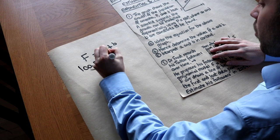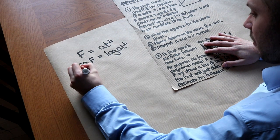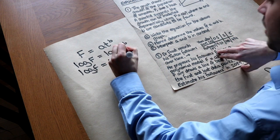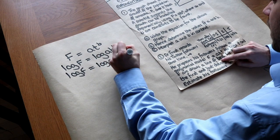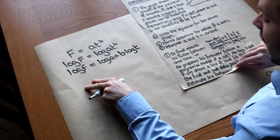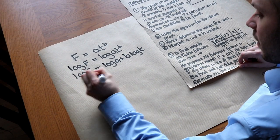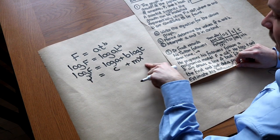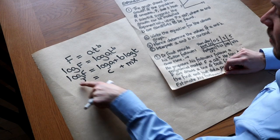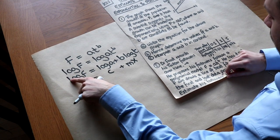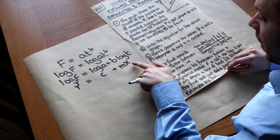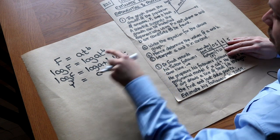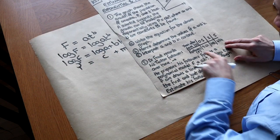Starting with the original model F equals AT to the B, we log both sides. Using laws of logs: log F equals log A plus B log T. Comparing to the equation of a straight line Y equals MX plus C, the Y variable is log F and the X variable is log T — unlike the exponential case, here we must log both T and F.